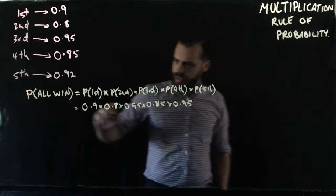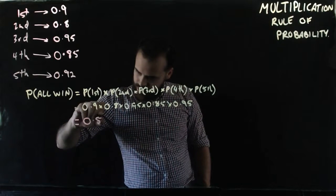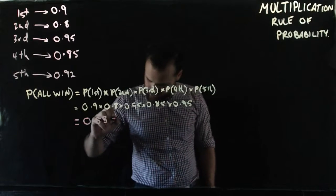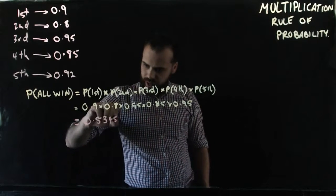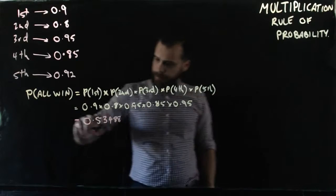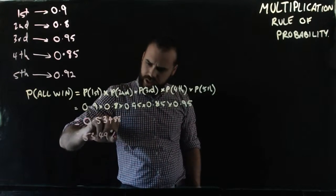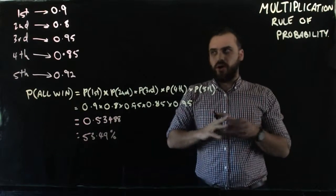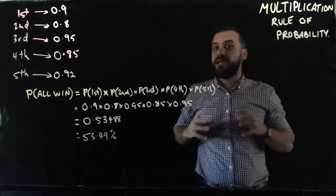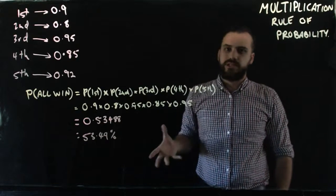I've put that into my calculator and the answer is very surprising. It's 0.53488. As a percentage, that means there's a 53.49% chance that on this particular weekend, where every one of our teams is an outstanding favorite, there's only a 53% chance that we're going to clean sweep this thing.